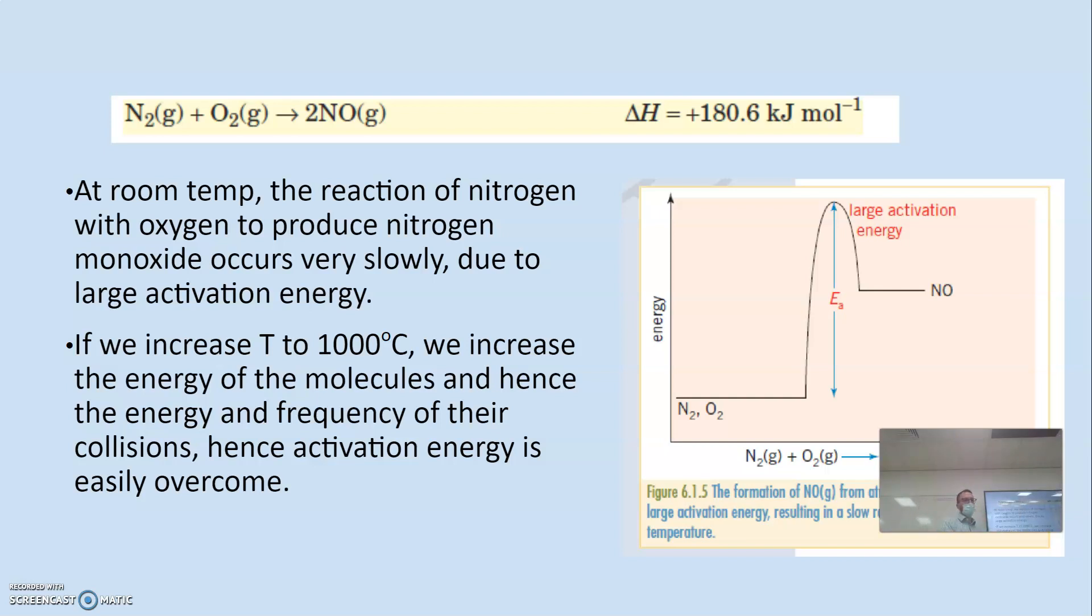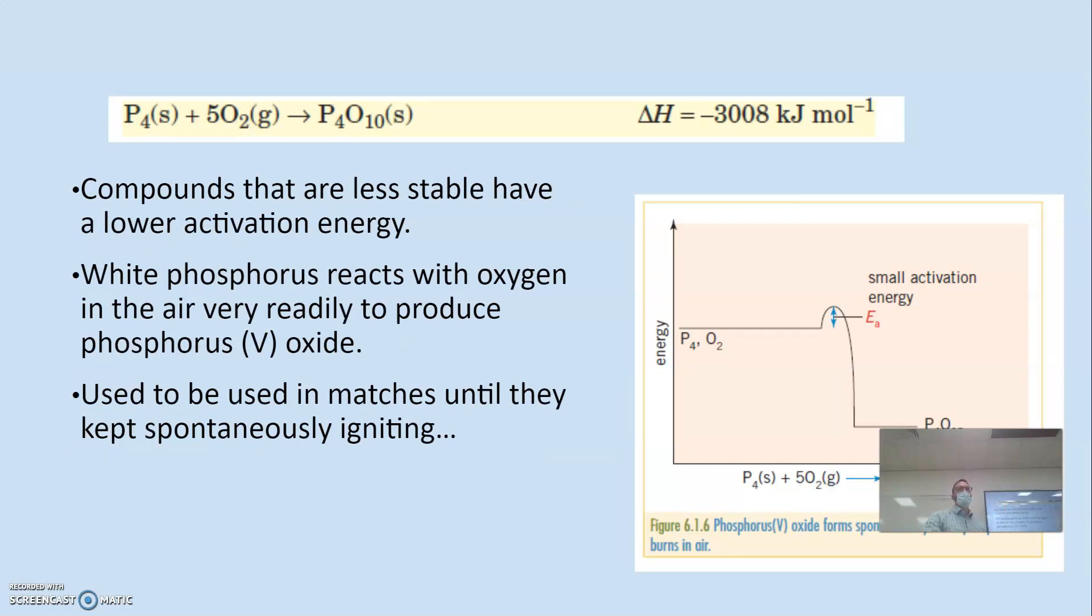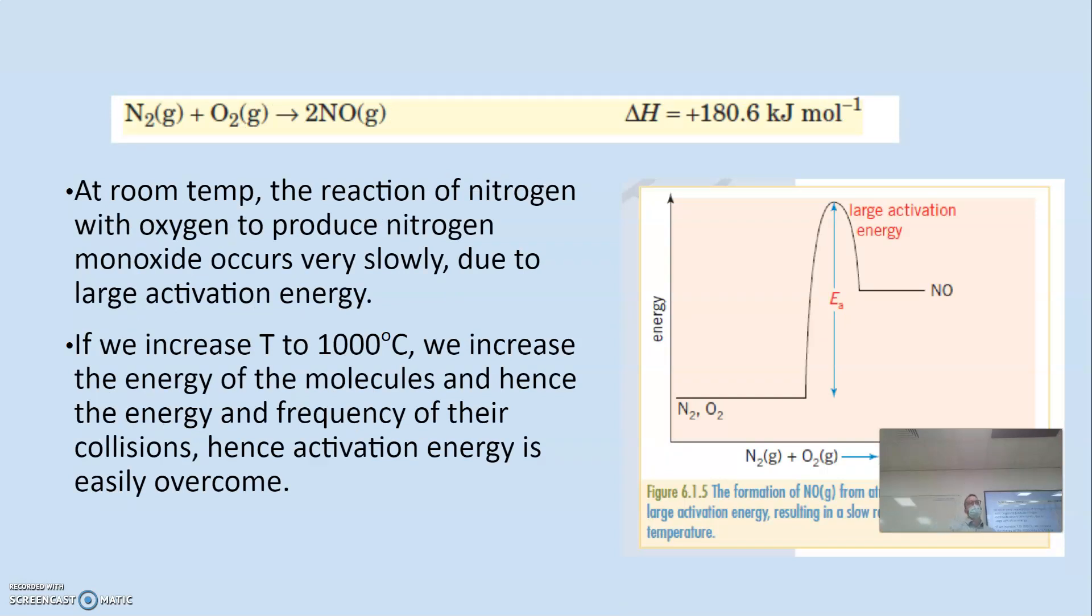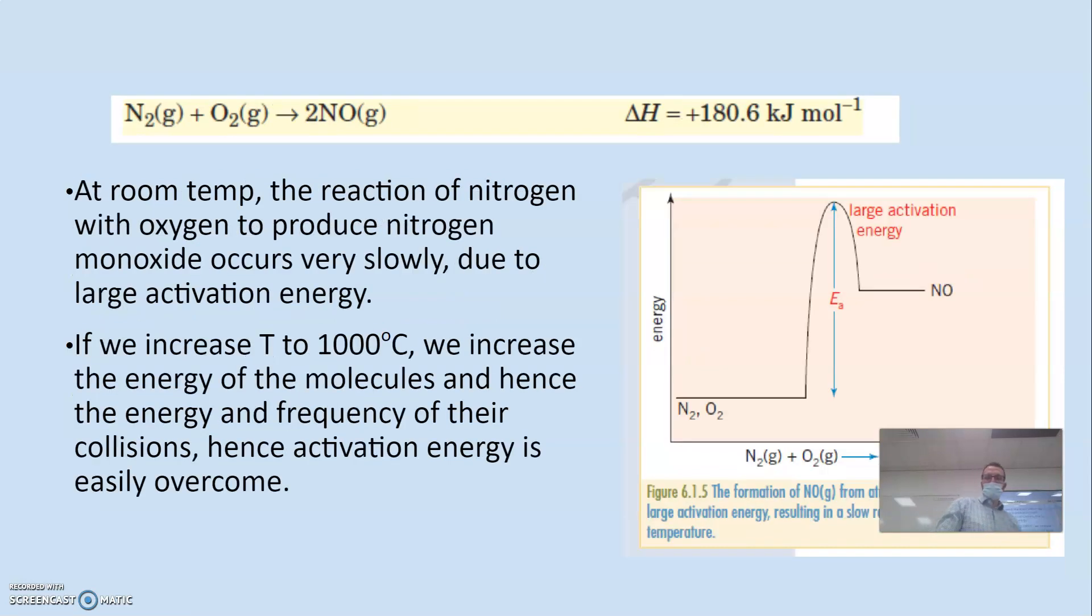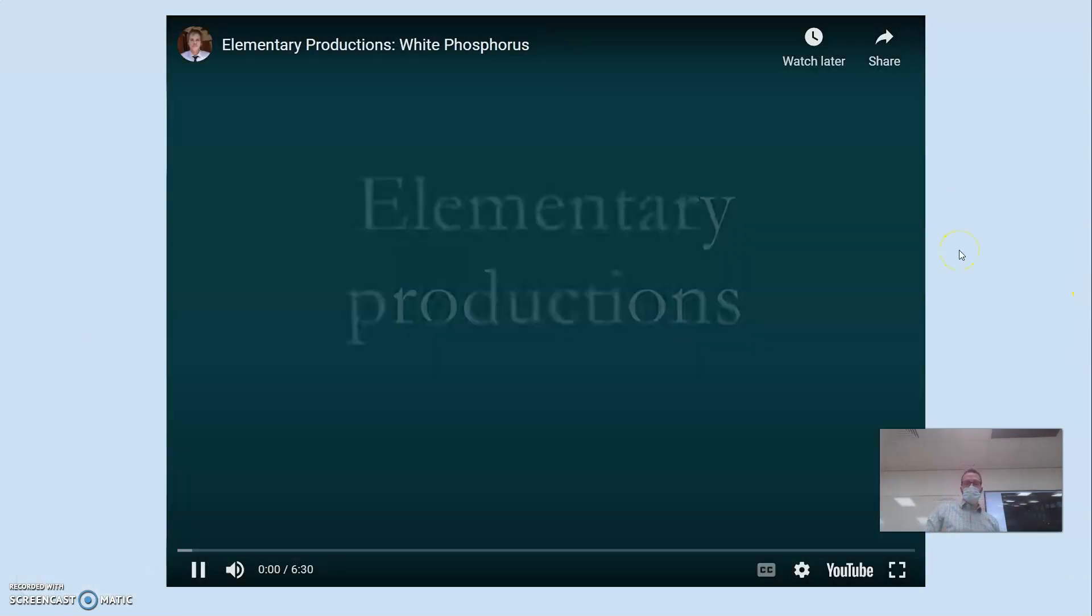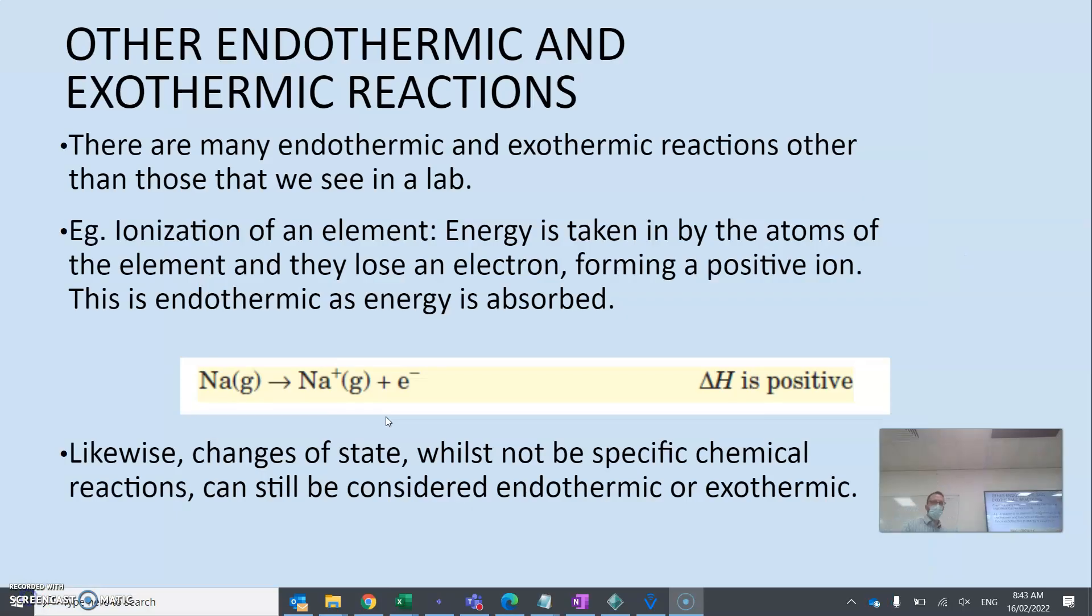Room temperature, the reaction of nitrogen and oxygen produced as nitrogen monoxide occurs very slowly. If we increase the temperature, what do we know about rate of reaction? Increasing temperature increases the rate of reaction. So again, we'll talk about this in greater detail when we get to rate of reaction. And the reverse is true. If we cool a reaction down, we slow the rate of reaction. So we notice this reaction, white phosphorus, what do you notice about the activation energy in comparison? It's hardly anything. I'll pause there. We can see an exothermic reaction.